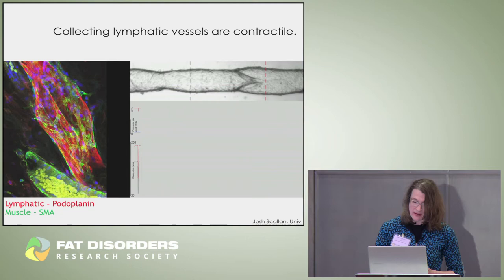The belly view of the animal shows it developed chylous ascites — leakage in the abdomen — and chylothorax. These are the animal models we can use to actually test drugs to try to prevent the phenotype and the symptoms.